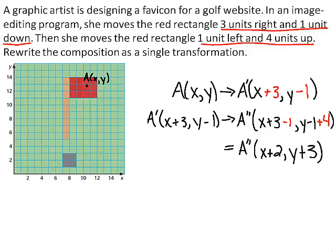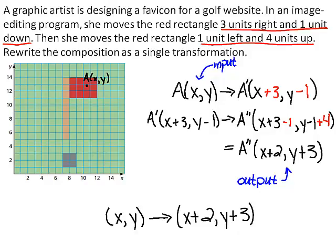The composition of translations uses the original point as the input and returns the point as the output. So the single translation rule for the composition is x, y maps to x plus 2, y plus 3.